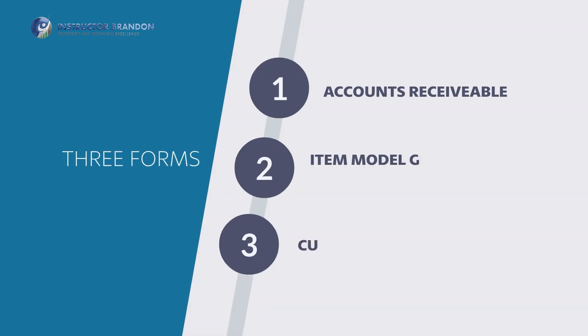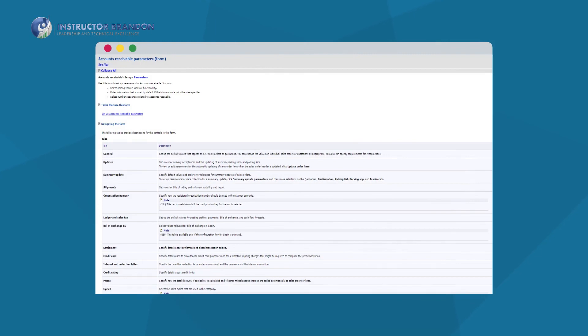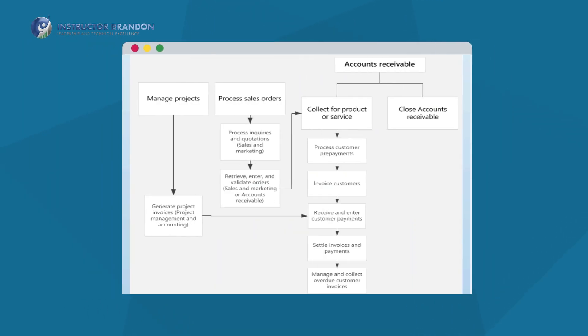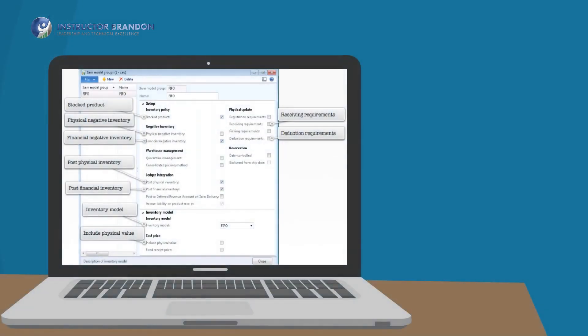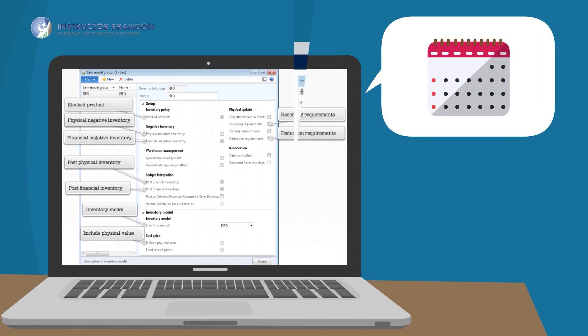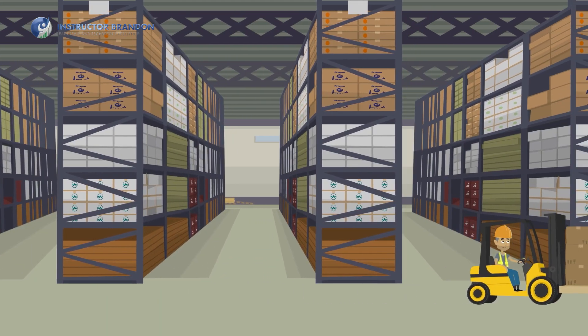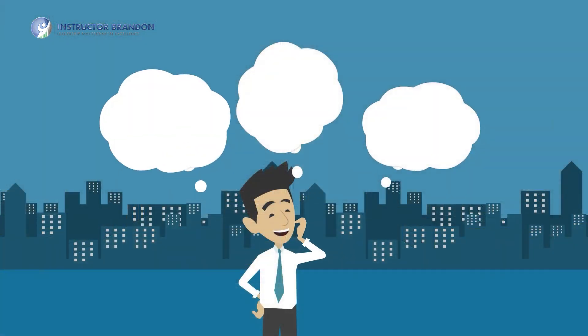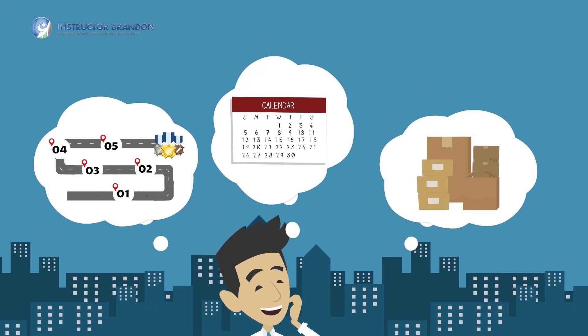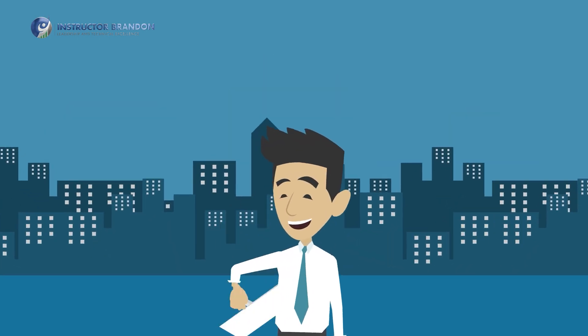Now, there are three forms to specify settings. The accounts receivable parameters form first. You can do this by automatically or manually reserving items. Second, the item model group form. You can use this to set up reservation dates. And finally, the customers form. If you want to set up the warehouse where the inventory is going to be reserved. In this way, you can control all the steps, dates, and quantities of your reserved inventory and protect your investment.